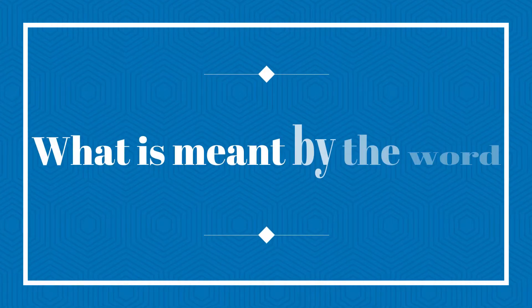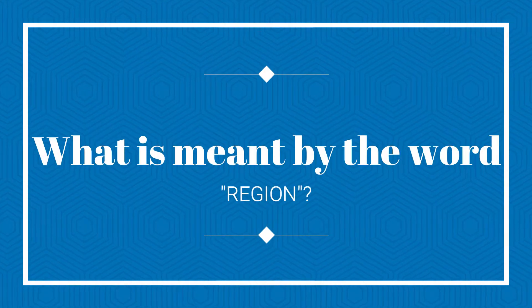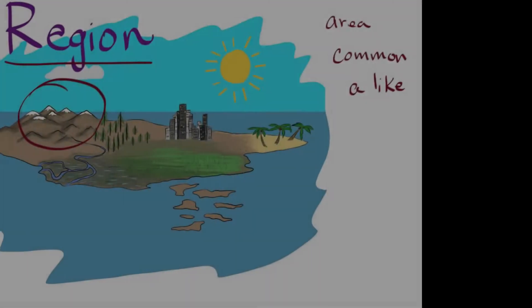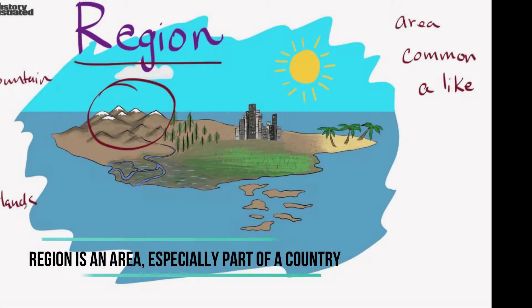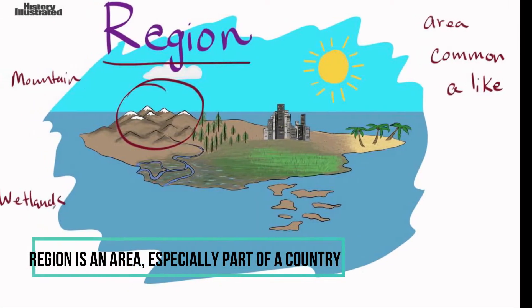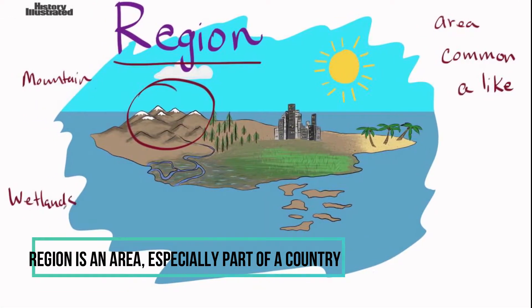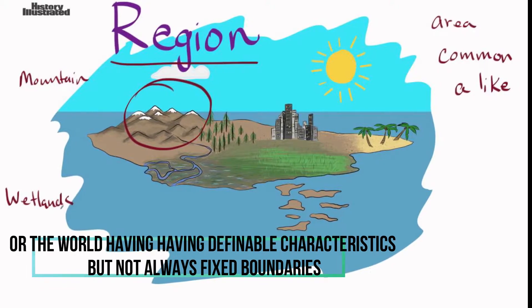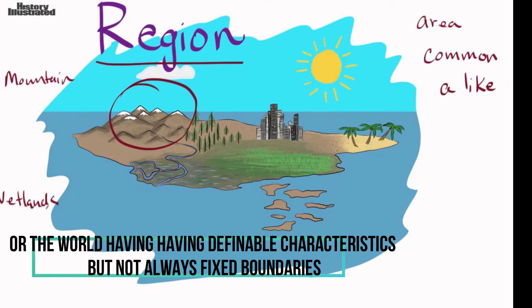Sab se pahle 'region' word ko dekhiye — kya aapko pata hai what is meant by a region? Region ka matlab hota hai an area, especially part of a country or the world, having definable characteristics but not always fixed boundaries.